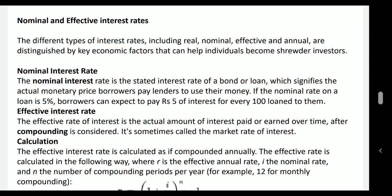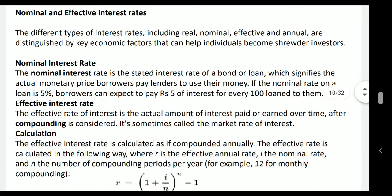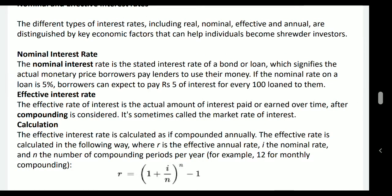Nominal interest rate is the stated interest rate of a bond or loan, which signifies the actual monetary price borrowers pay lenders to use their money. If the nominal interest rate on a loan is 5%, borrowers can expect to pay rupees 5 of interest per every 100 loaned to them. The effective rate of interest is the actual amount of interest paid or earned over time after compounding is considered. It is sometimes called the market rate of interest. What is stated will be the nominal rate per annum, but if the compounding period is less than a year, then the actual market value per annum will be higher than the nominal rate.